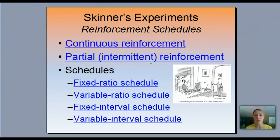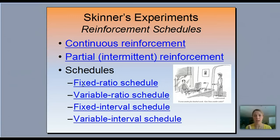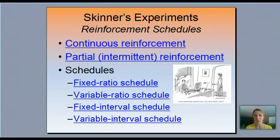Now the different types of schedules — we're going to look at four: a fixed ratio and a variable ratio. Think of fixed as meaning the same: every 10 you get something. Variable means it changes — sometimes it'll be 1, sometimes it'll be 7. Then there's a fixed interval schedule and a variable interval schedule. Those are the four we'll look at.